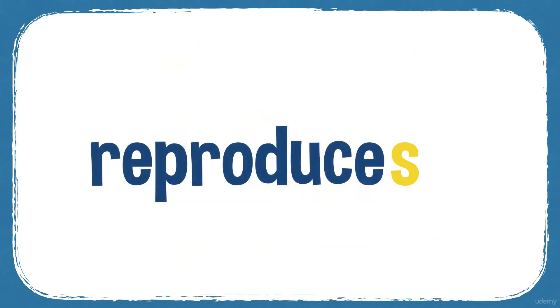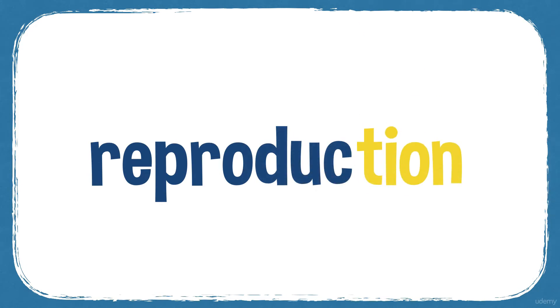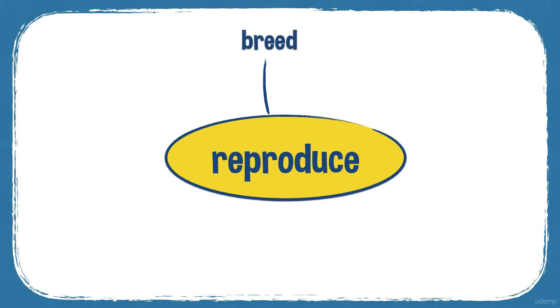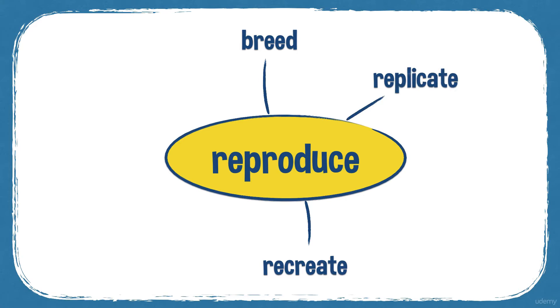Reproduce is a verb — reproduces, reproducing, reproduced. Reproduction is the noun, the process of reproducing. Synonyms: breed — animals when they reproduce, they breed, though people don't breed; recreate; replicate; and clone, which is a more modern scientific technique for reproduction.